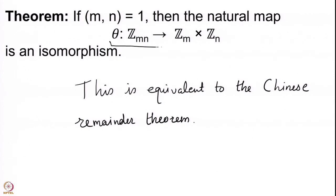The statement says that whenever m and n are a pair of natural numbers which are coprime to each other, there is a ring isomorphism from the residue classes modulo mn to the product of the residue classes modulo m with the residue classes modulo n. This isomorphism sends the residue class of a modulo mn to the pair (a mod m, a mod n).